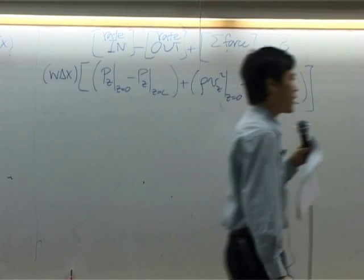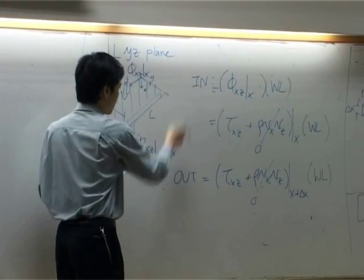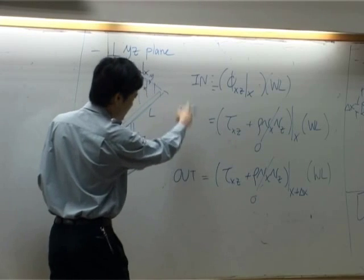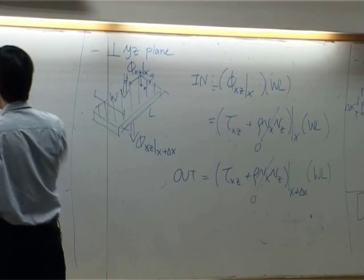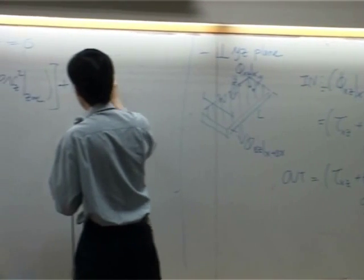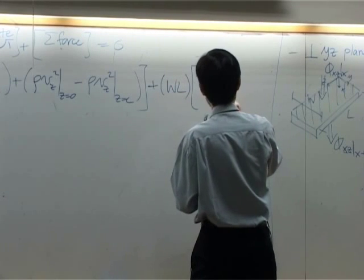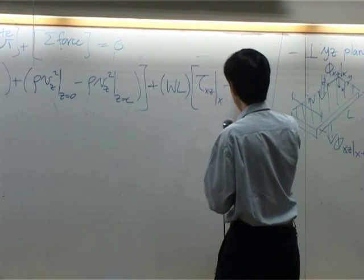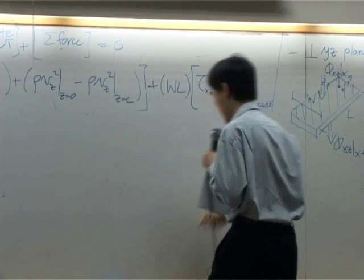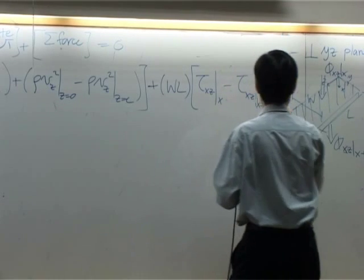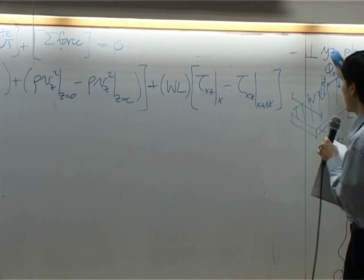The second one is in minus out in Yz plane. So these two terms subtract by each other, you have only term of tau. And the common term would be WL: tau xz at x minus tau xz at x plus delta x.